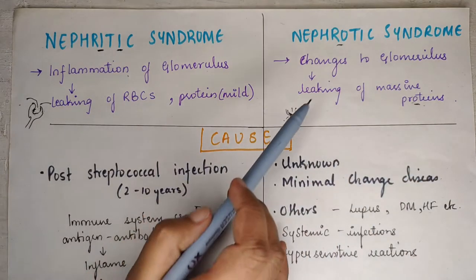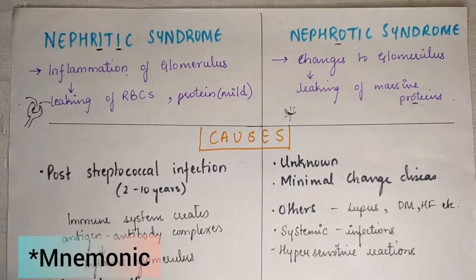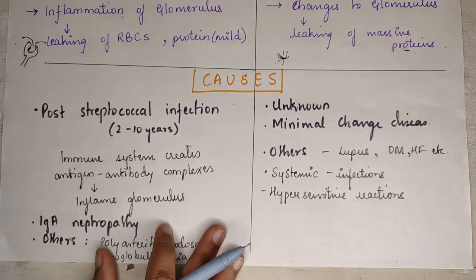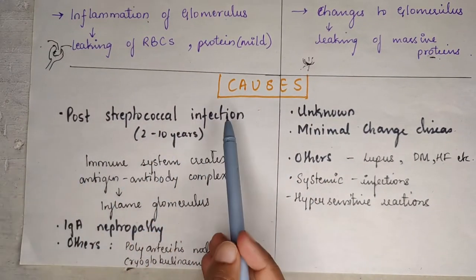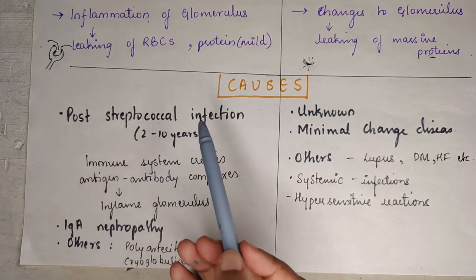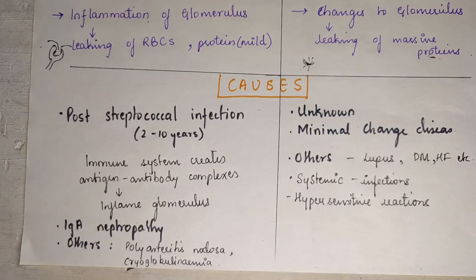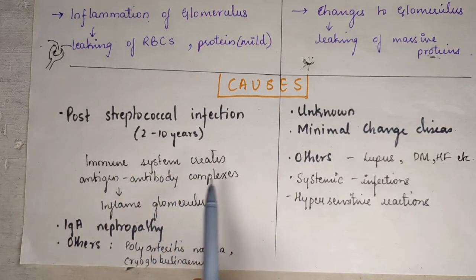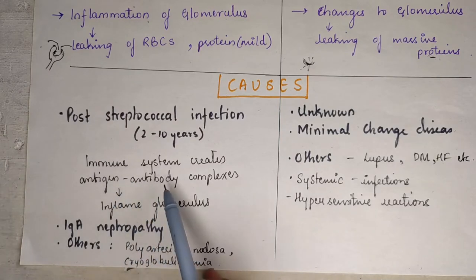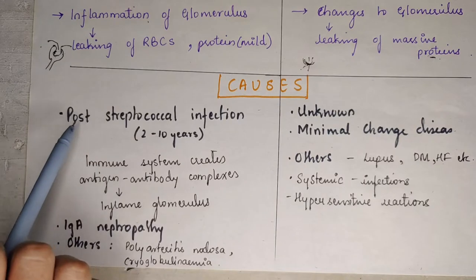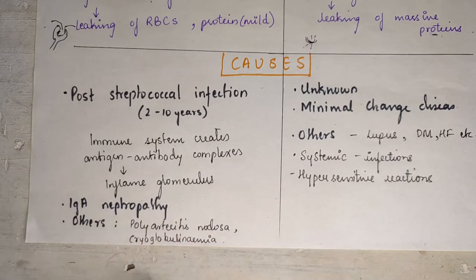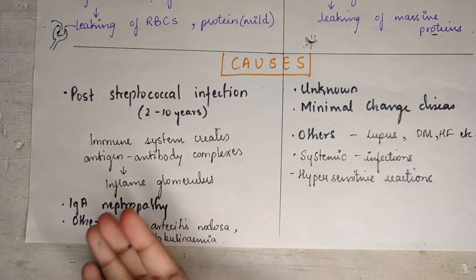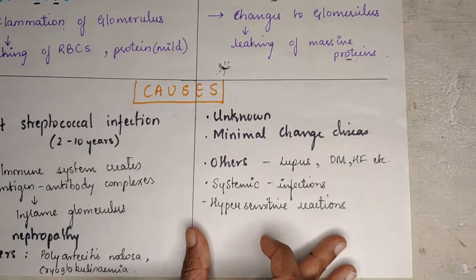Now let's come to the causes of nephritic syndrome. The causes include post-streptococcal infection, especially in children. If a throat infection is not treated, the immune system creates antigen-antibody complexes that inflame the glomerulus, leading to nephritic syndrome. Other causes include IgA nephropathy, polyarteritis nodosa, and cryoglobulinemia.